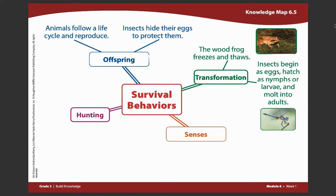We saw an example of the stages of development for the frog in the text Frozen Alive. We also learned the different steps in the life cycle of a dragonfly when reading the text This Is Your Life Cycle. Take a moment to write this sentence down on your knowledge map.